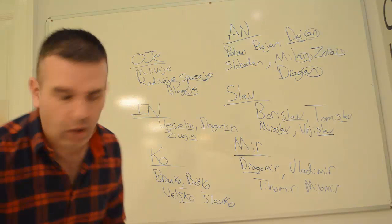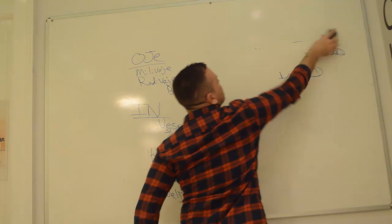Those are the most popular, regular, most common endings and they're easy to see. When you see Mir, Slav, AN, OJE, IN, KO, it's usually a boy - or it always is a boy. But now let's look at some other ones that don't really follow these rules of these endings, but they're very common here.